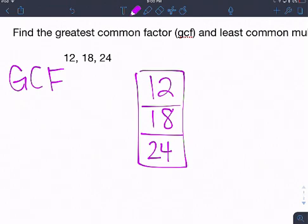So, greatest common factor. Back to that. What number goes into all three of these evenly? Well, I'm looking here, and I see that 2 goes into all three of these evenly. So I'm going to put my 2 on the top. 2 times 6 is 12, 2 times 9 is 18, and 2 times 12 is 24.